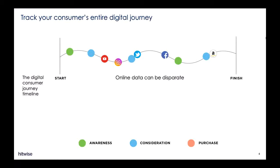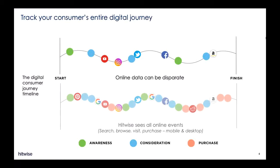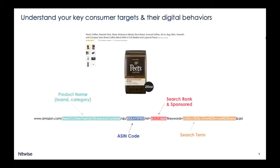While online data can be disconnected, HitWise sees all online events — like search, browse, visit, and purchase behaviors — allowing you to build and target these audiences through paid search, content, programmatic, and other digital marketing channels. Through analytics and URL thread data, you can understand key consumer targets and their digital behaviors.